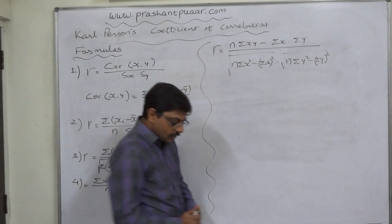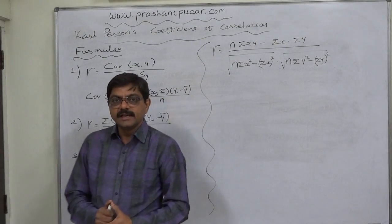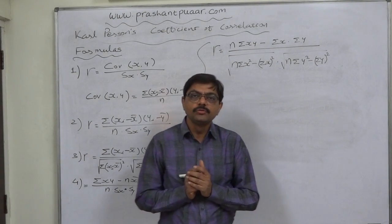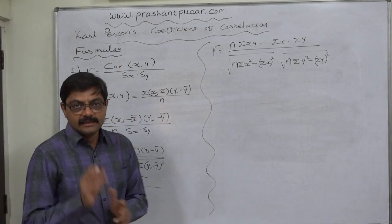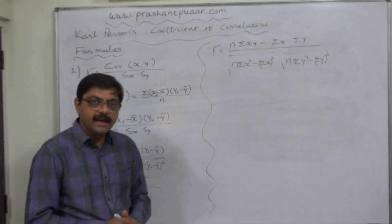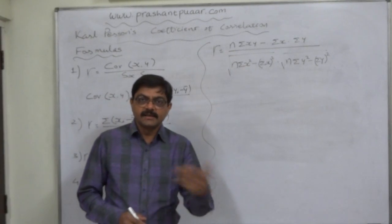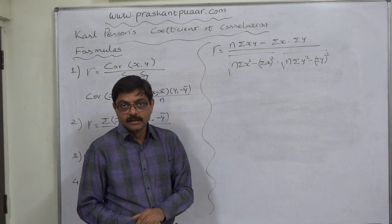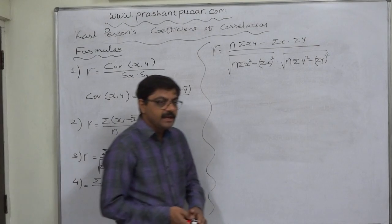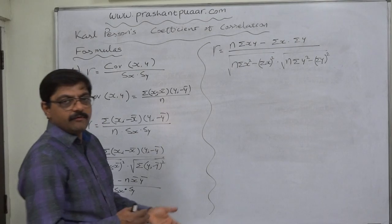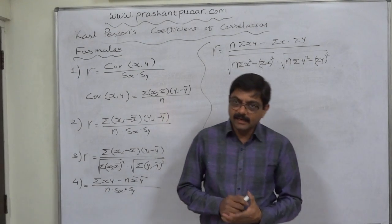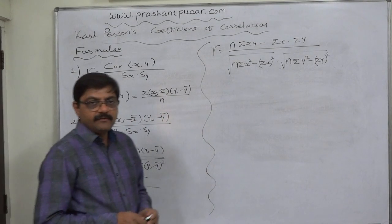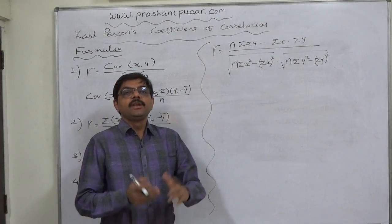A unique feature of the coefficient of correlation is that it is independent of change of origin as well as change of scale. Change of origin means adding or subtracting any constant value from the original data. If we derive two new variables u (against x) and v (against y), the coefficient of correlation between u and v will be exactly equal to the coefficient of correlation between x and y. When we have very large, very small, or decimal values, we can use this technique to simplify calculations by converting x into u and y into v.